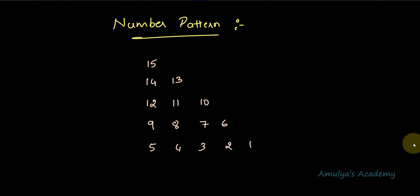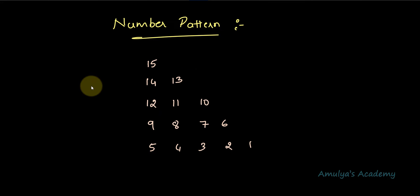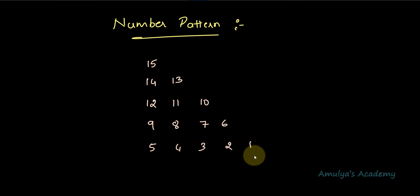Hello guys and welcome to Amulya's Academy YouTube channel. Today in this tutorial we will write a Python program to print a number pattern in a right triangle shape. When the number of rows is 5, the pattern will begin from 15 and will end at 1.